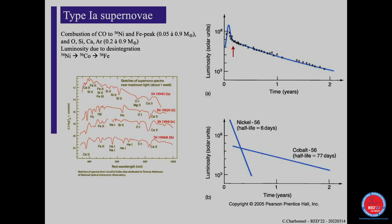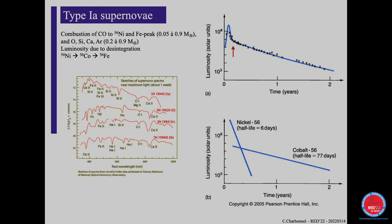What will happen in terms of nucleosynthesis is that the carbon and oxygen core will undergo a nuclear reaction, and you will be able to make nickel-56, and also some iron, oxygen, silicon, and related elements. A star of around eight solar masses can produce almost one solar mass of these elements during the detonation. In the spectrum of one such star, you see iron, silicon, and calcium, which are made during this phase.